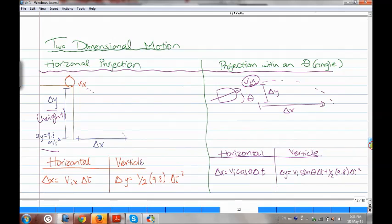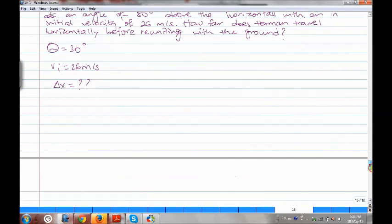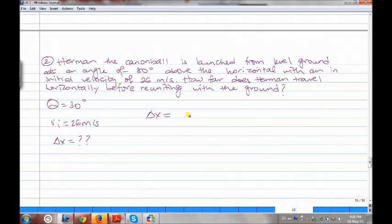These are the three givens. So we're going to use the equation for the horizontal. So delta X equals to VI cosine theta delta T. Let's say they gave us this time as three seconds. So delta X equals to VI times delta T, which is three seconds.